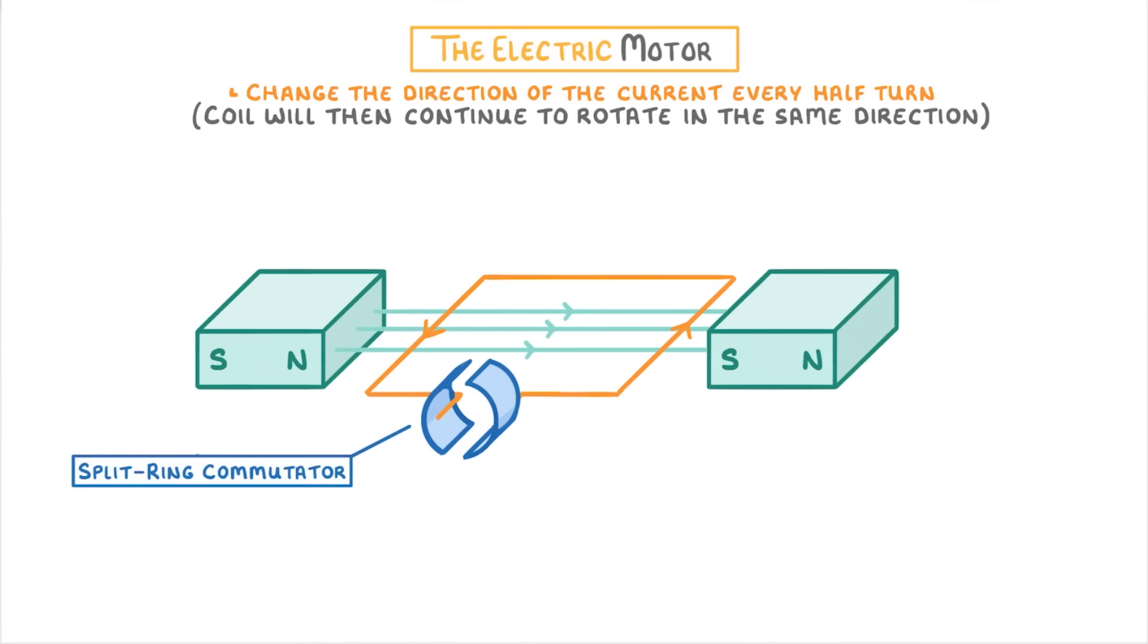To achieve this, we use this weird device, which we call a split ring commutator.